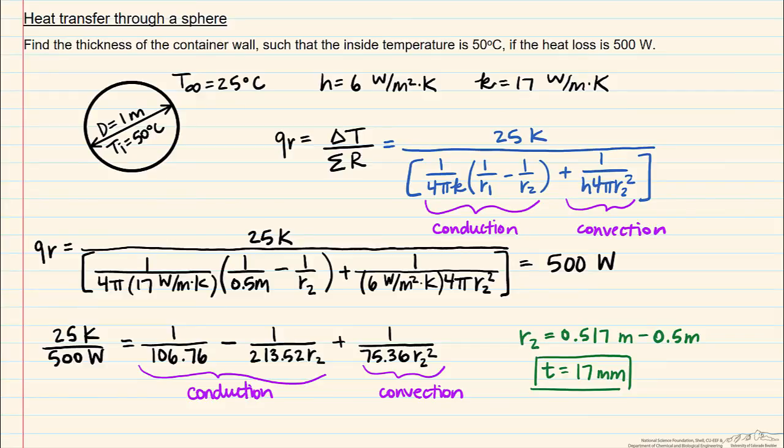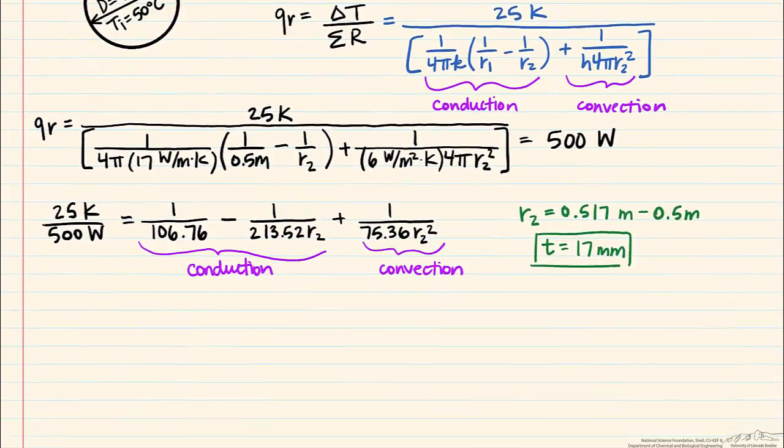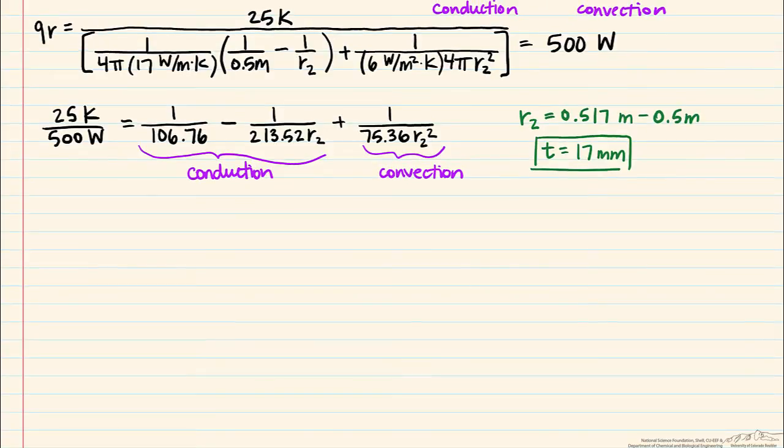Let's take a look when we solve for the two resistances separately. So when we put in the numbers for our conductive resistance, we end up with 3.08 times 10 to the minus 4 Kelvin per watt. When we solve for our convective resistance, we come up with 0.049 Kelvin per watt. Clearly, the convective resistance dominates in this scenario.